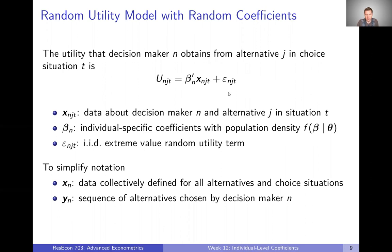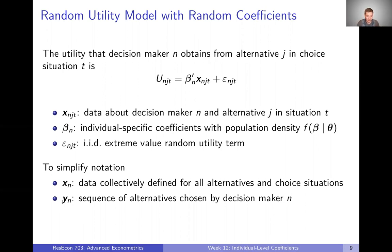Now just to simplify notation, let's collect each of our T-specific data and choices into a larger matrix or vector. So let's define X sub N as all of the data collectively for individual N over all the alternatives and all the choice settings that they see — collecting all of the X sub NJTs into one big X for that individual. And Y sub N: if we have multiple choice situations, we're going to see a whole vector of choices — this person chooses alternative one first, then three, then two, then one, then two. We can see this whole vector of choices as opposed to just a single choice.